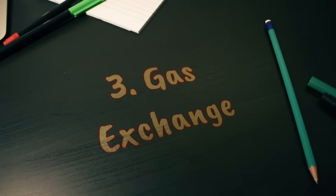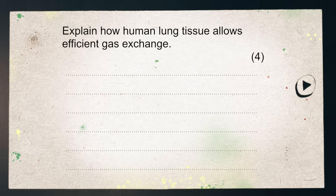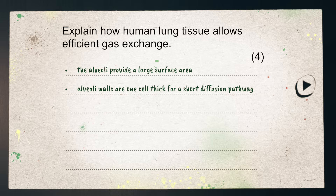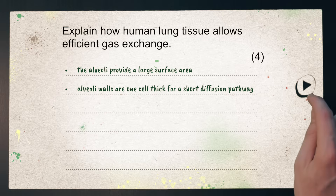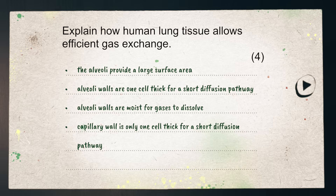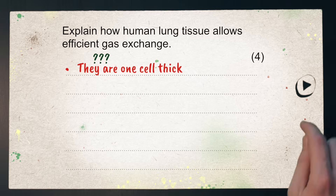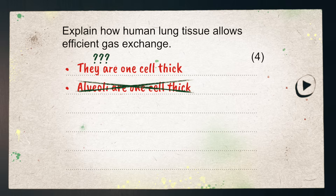Another common question theme is the gas exchange system. These usually get you to describe or explain the features of the alveoli. A good example is 'explain how human lung tissue allows efficient gas exchange'. Since it's an explain question, you have to give reasons or justify each point rather than just describing features. Firstly, the alveoli provide a large surface area. Alveoli walls are one cell thick, providing a short diffusion pathway. Alveoli walls are moist for gases to dissolve. The capillary wall is also only one cell thick for a short diffusion pathway, and the flowing blood maintains a concentration gradient. Be specific — saying 'they' makes it unclear what you're referring to. A very common error is stating that the alveoli are one cell thick — this is wrong. It's their walls that are one cell thick.